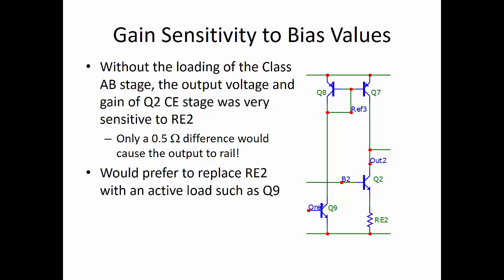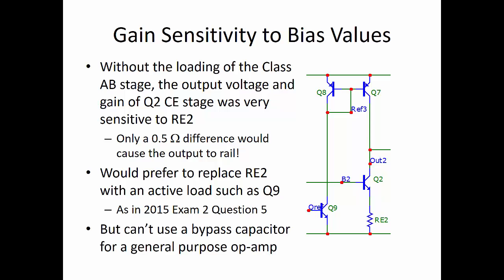In this case, it would be nice to replace RE2 with an active load, such as Q9, a current mirror. If you look at exam 2015, question 5 on the second exam on 2015, you'd see what I mean. But we cannot use a bypass capacitor for a general purpose op-amp, so that would make life more difficult for the amplifier.